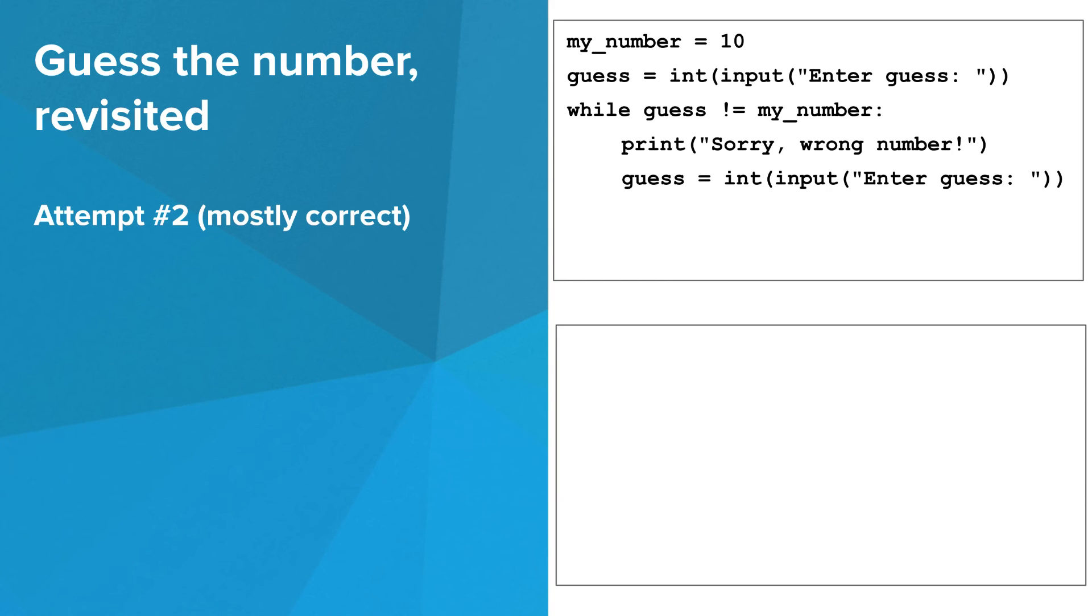Now, before the while condition is reevaluated, the variable guess has a chance to change. This means that the condition might have a different truth value than before. In other words, each time we get to the top of the while loop, while guess may not have been equal to my_number before, it might be equal this time.